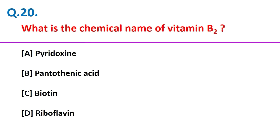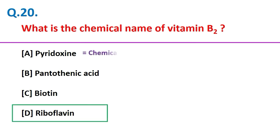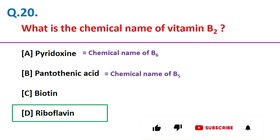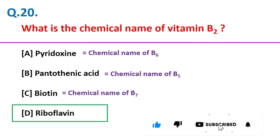What is the chemical name of vitamin B2? Riboflavin. Friends, the chemical name of vitamin B6 is pyridoxine, the chemical name of vitamin B5 is pantothenic acid, and the chemical name of vitamin B7 is biotin.